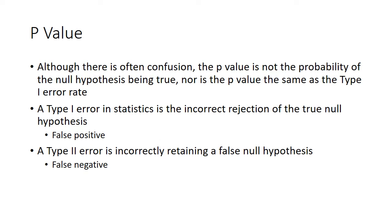There can be a lot of confusion when dealing with p-values. The p-value is not the probability of the null hypothesis being true, nor is it the same as a type one error rate. A type one error is the incorrect rejection of a true null hypothesis — in other words, a false positive. For example, if I gave the antihypertensive to those 50 people and there actually was no true difference, but I incorrectly concluded that there was — that would be a false positive, rejecting the null hypothesis even though it was true. On the flip side, a type two error is when we run an experiment, find no difference, but there actually is a true difference, and we retain the null hypothesis even though it's false — that's a false negative.